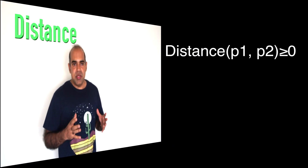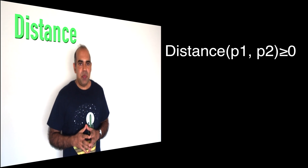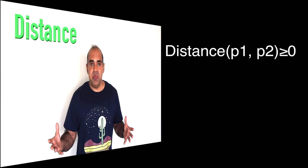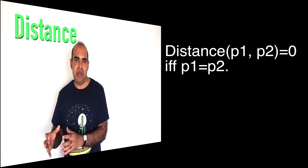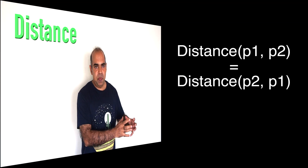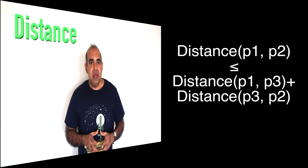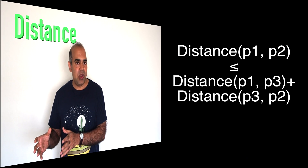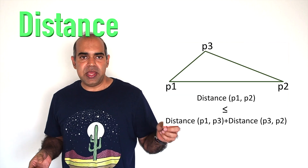A distance formula must satisfy four axioms. Number one: distance between point P1 and point P2 should always be greater than or equal to zero — the distance between two points can never be negative. Property number two: if the distance between P1 and P2 is zero, then P1 and P2 are the same points. Property number three: the distance between P1 and P2 is equal to the distance between P2 and P1. Property number four: distance between P1 and P2 is always smaller than or equal to the distance between P1 and P2 via another point.